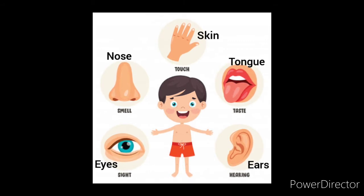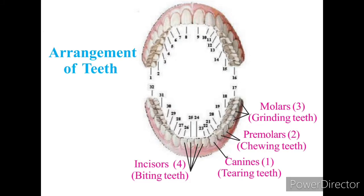Next activity: draw the arrangement of teeth in our mouth and identify the types of teeth. We have already discussed the arrangement of teeth. You have the picture in your textbook — draw it and name all the types of teeth.